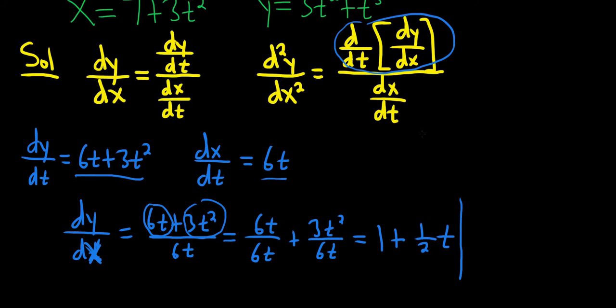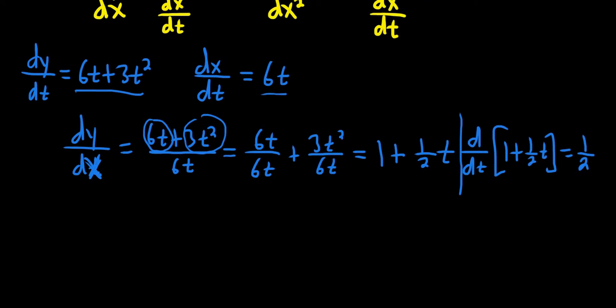So now we can find the top piece of the second derivative. So d/dt of this, that's going to be the numerator of our second derivative. It's just 1/2. So nice. So it worked out really, really nice. So finally, the second derivative.